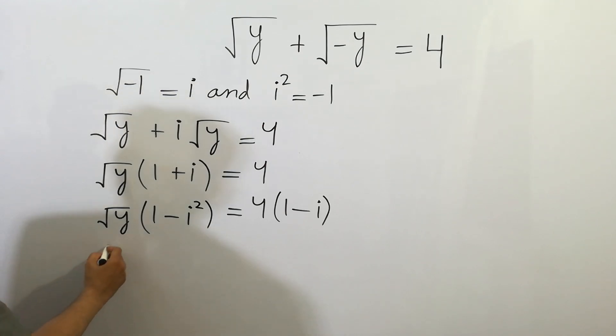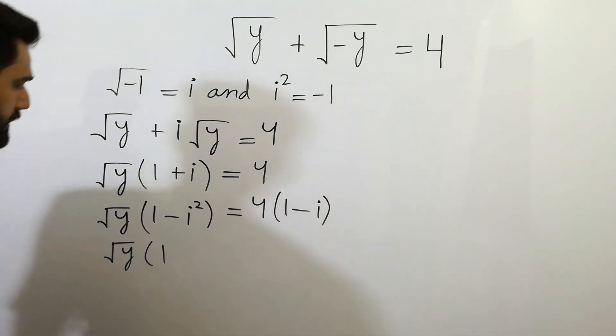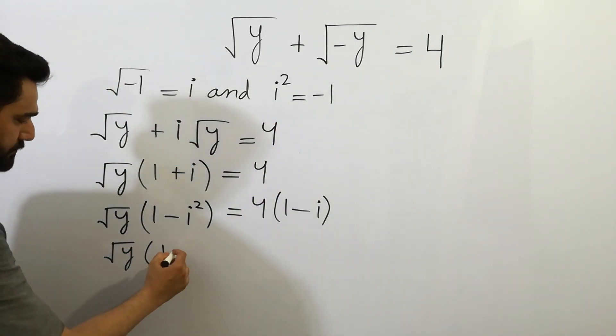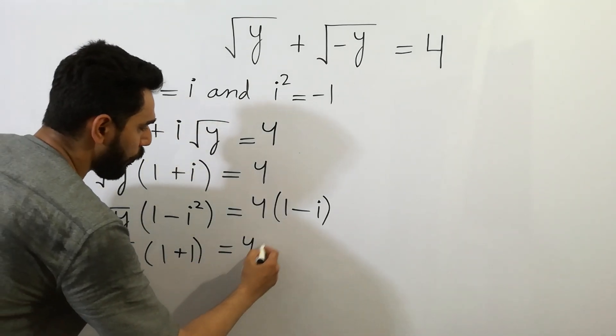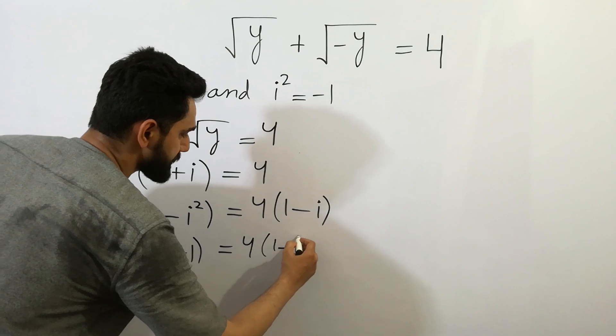Here, square root of y as it is. 1 minus i squared is equal to minus 1, so minus minus will be plus, we can write plus 1 is equal to 4 times 1 minus i, as it is.